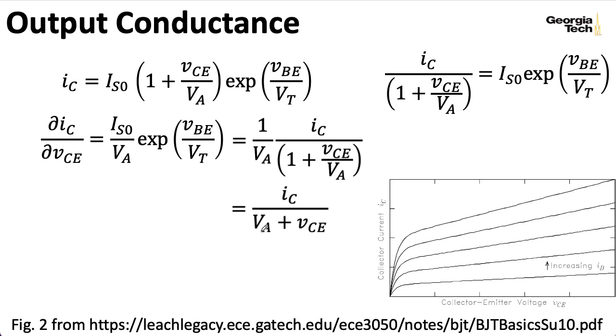So the output conductance is related to the collector current divided by the collector emitter voltage plus our early voltage. Now, in practice, we'll evaluate this at a particular operating point Q, so I can plug in my capital IC for my lowercase i, capital C here. And we'll define the slope at the Q point as an output conductance, which I'll write here as G sub 0.